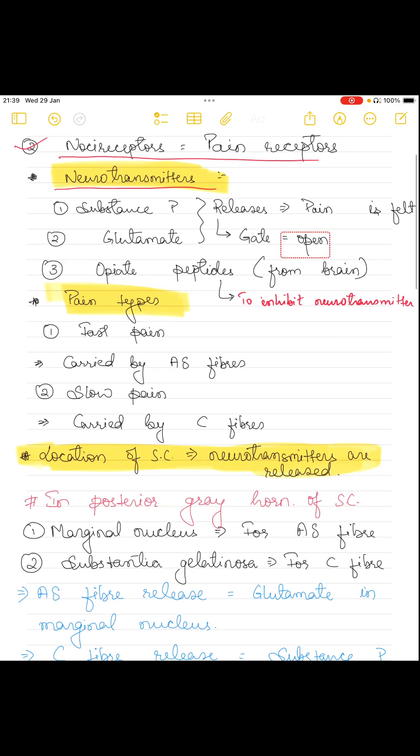The second thing is neurotransmitters. There are three neurotransmitters. The first two are substance P and glutamate—when these are released, the pain is felt, which means the gate is open. The third neurotransmitter is opiate peptides, which is released from the brain to inhibit substance P and glutamate.